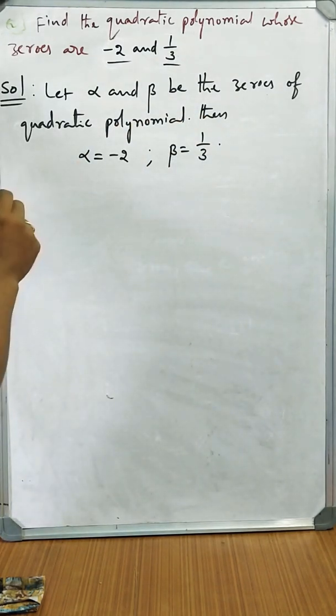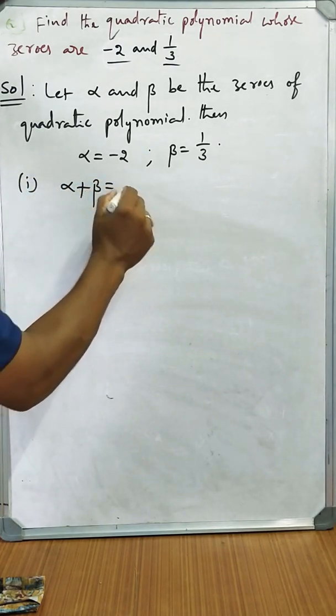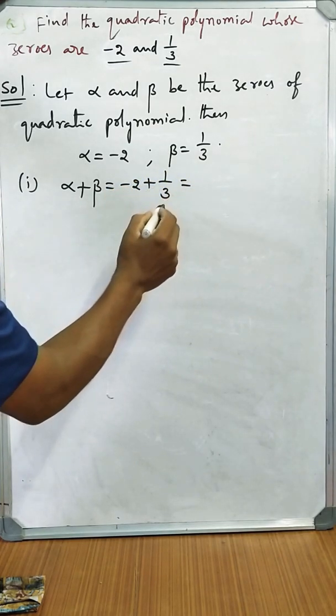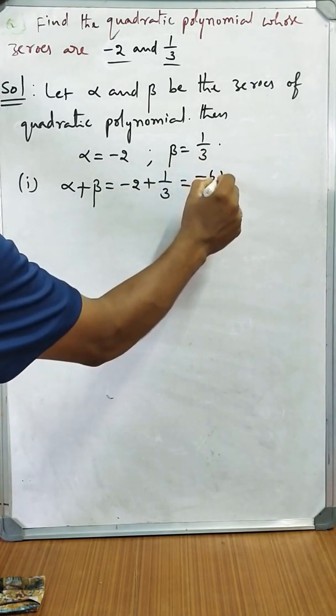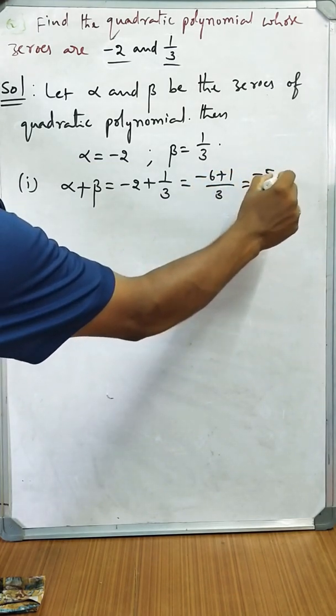First of all we should find the sum of the zeros. That is -2 plus 1/3, which is -6 plus 1 over 3, that is equal to -5/3.